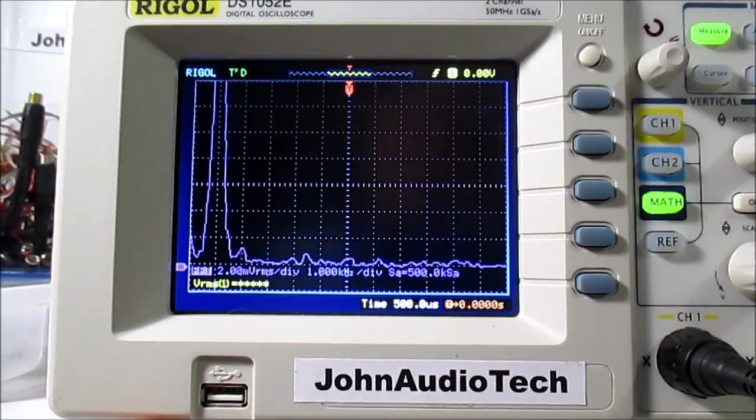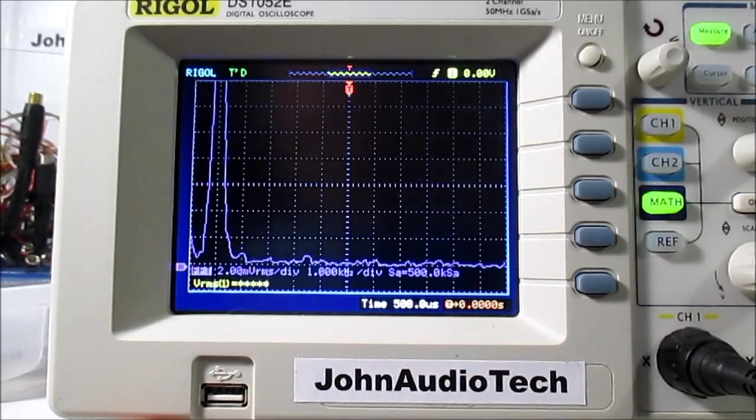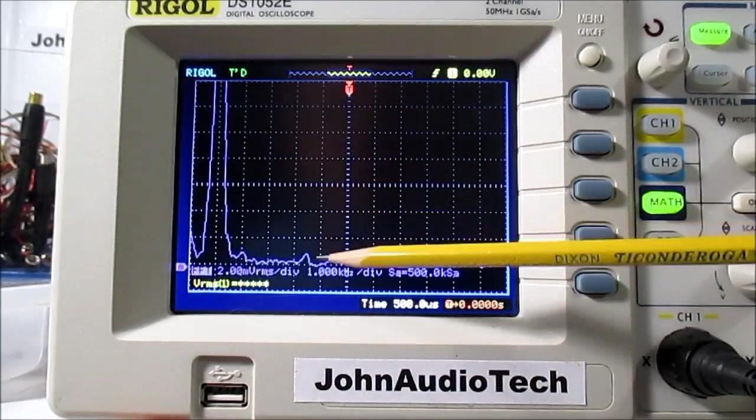Somebody tried to tell me that, oh, you can't see below 0.4% because it's an 8-bit scope. Well, that's not true. You can actually see lower. We saw the 0.3, we're seeing the 0.2.